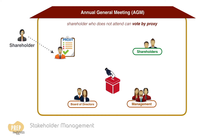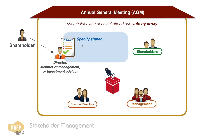This person can be a director, member of management, or the shareholder's investment advisor. A proxy may specify the shareholder's vote on the issues or leave the vote to the discretion of the assignee.